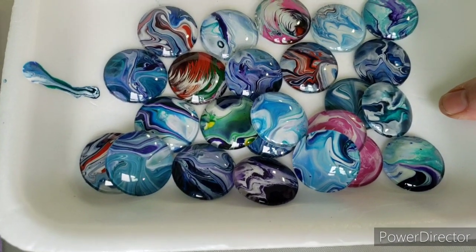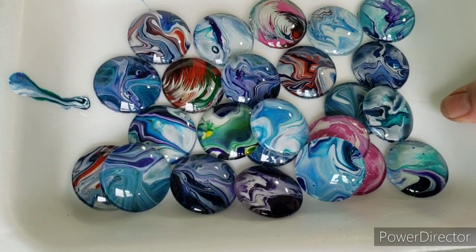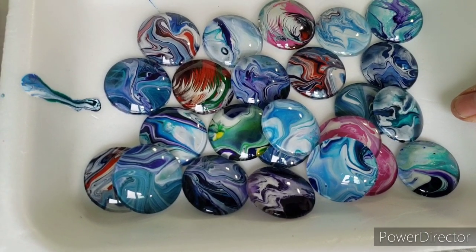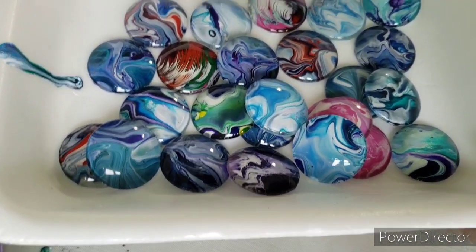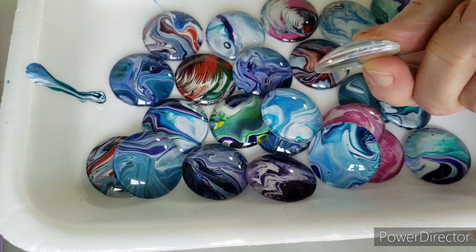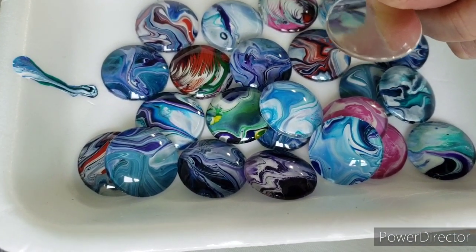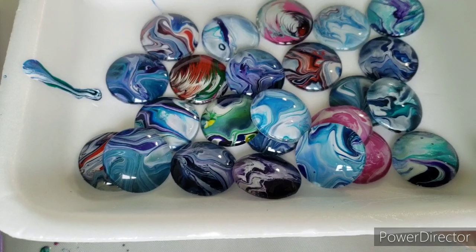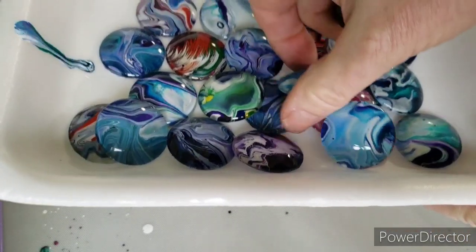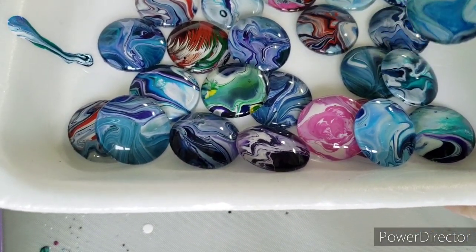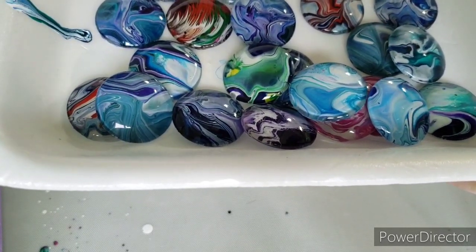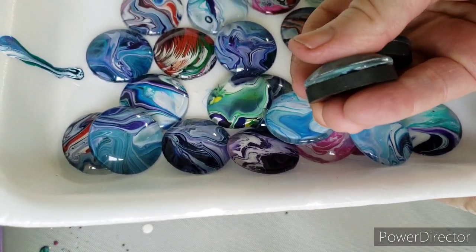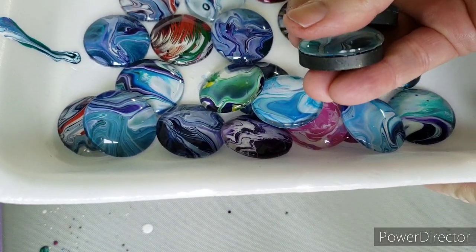I want to show you how to make magnets from the paint that drips down from your acrylic pours. You take these glass cabochons and put them on the paint skins that you get from pouring, then you put magnets on the back of it.